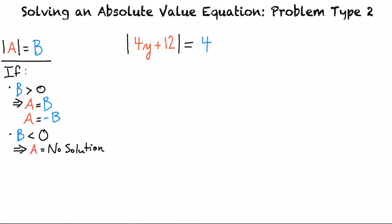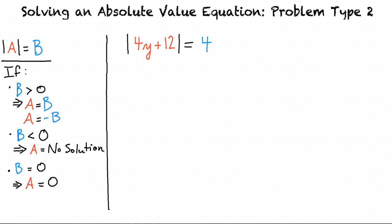If b is less than 0, then the absolute value equation has no solution, because an absolute value cannot be negative. And if b equals 0, then there is only one solution, where a equals 0.